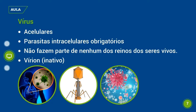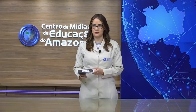Eles invadem a célula dos seres vivos e se reproduzem — por isso são chamados de parasitas intracelulares obrigatórios. Quando estão fora da célula, são considerados inativos. Dentro de uma célula de um ser vivo, os vírus estão ativos; fora da célula, são considerados inativos. Por não terem célula, eles não fazem parte de nenhum dos reinos dos seres vivos — são estudados sozinhos.